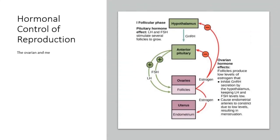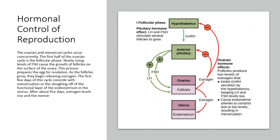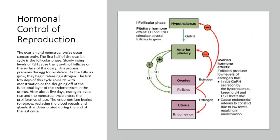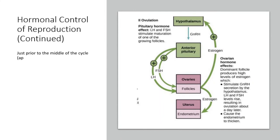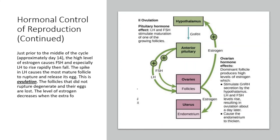Hormonal control of reproduction. The ovarian and menstrual cycles occur concurrently. The first half of the ovarian cycle is the follicular phase. Slowly rising levels of FSH cause the growth of follicles on the surface of the ovary, preparing the egg for ovulation. As the follicles grow, they begin releasing estrogen. The first few days of this cycle coincide with menstruation, or the sloughing off of the functional layer of the endometrium in the uterus. After about five days, estrogen levels rise and the menstrual cycle enters the proliferative phase. Just prior to the middle of the cycle, approximately day 14, the high level of estrogen causes FSH and especially LH to rise rapidly then fall. The spike in LH causes the most mature follicle to rupture and release its egg — this is ovulation. The follicles that did not rupture degenerate and their eggs are lost.